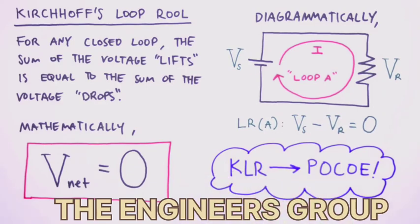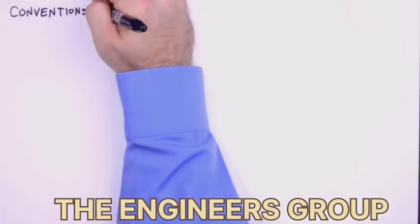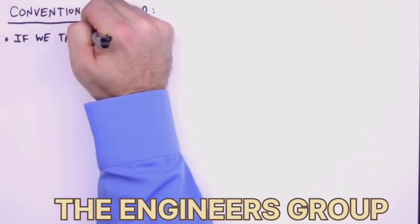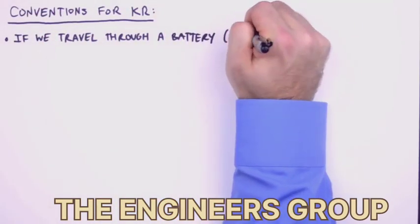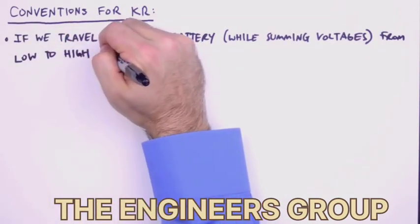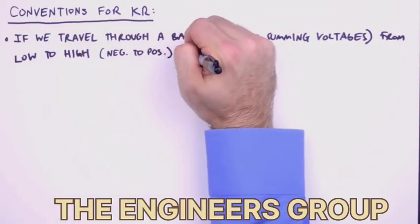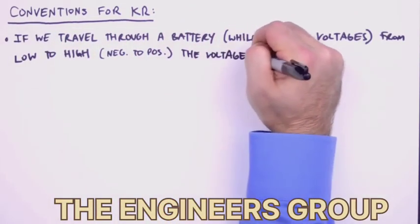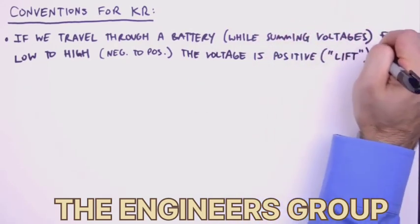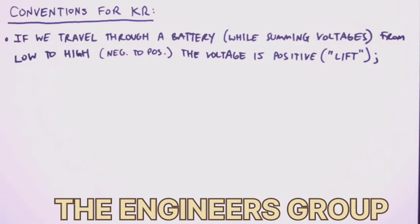Okay, now let's discuss the conventions associated with Kirchhoff's rules. The first two conventions relate to the loop rule in identifying voltage lifts and drops. If we're moving around a loop, and we travel through a battery while summing voltages, and we go from low to high, which is to say going from the negative terminal to the positive terminal, then the voltage of the battery is treated as a positive voltage, which we'll call a voltage lift because of the increase in electrical potential.